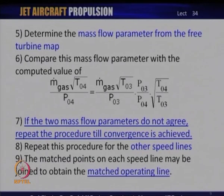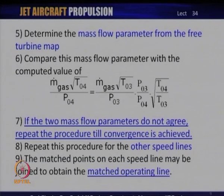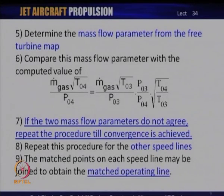When convergence is achieved, we get a matching point on the turbine map corresponding to a matching point on the compressor or fan map which this turbine is driving. We repeat this procedure for all other speed lines and off-design operating points. At each operating point, these parameters need to be exactly matched. The locus of all matched operating points is called the matched operating line.